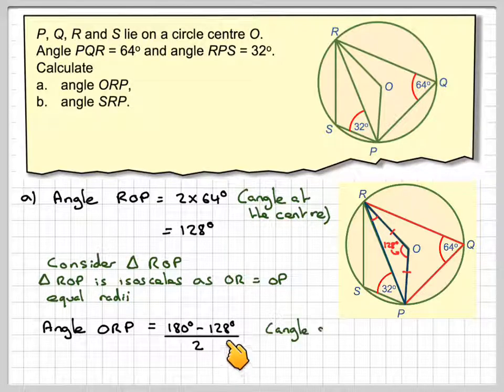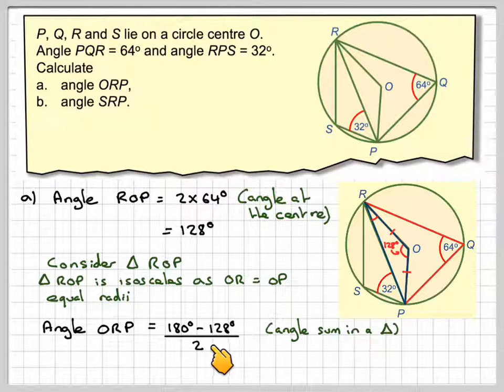It's going to be 180 minus 128 divided by 2, because we know this angle here is 128, and then we divide it by 2, we're going to get 26 degrees. So this angle here is actually 26 degrees.